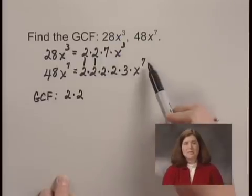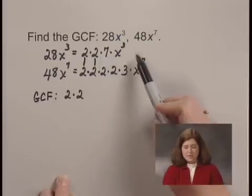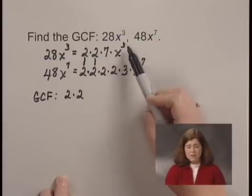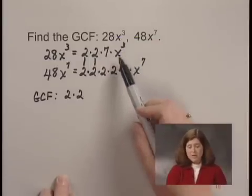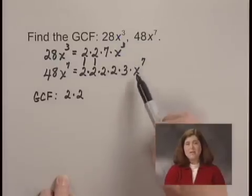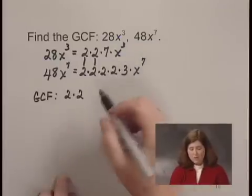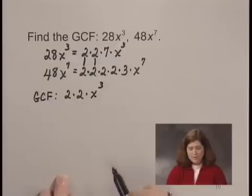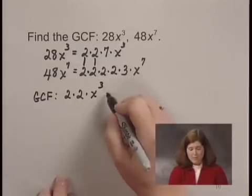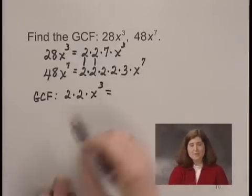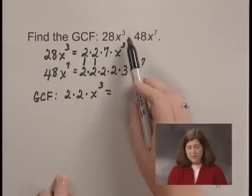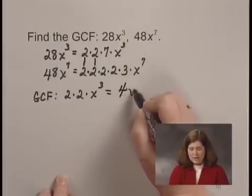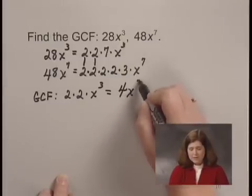x cubed and x to the 7th — we look at the smallest exponent of x, which is 3. The greatest common factor of x to the 3rd power and x to the 7th power will be x to the 3rd power. So we multiply these together, and we have that the greatest common factor of 28x cubed and 48x to the 7th is 4x to the 3rd.